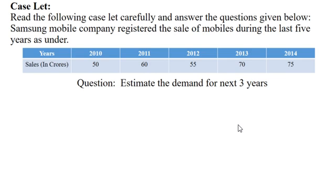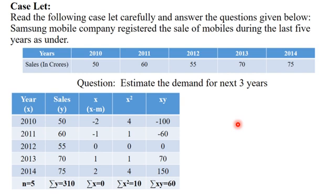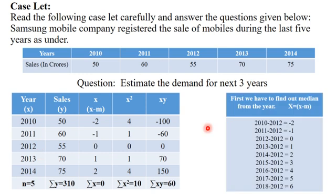We will assume year denotes as x and sale denotes as y. Total number of years is 5. Summation of y is 310. Then we have to find out x, which comes through x minus m, where x means year and m means median. Here, we can consider 2012 as the median. You can observe this table which is already calculated.